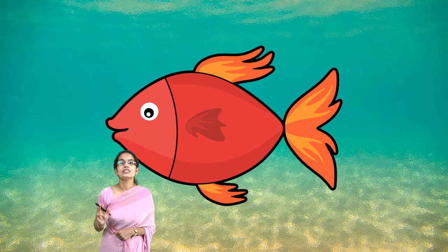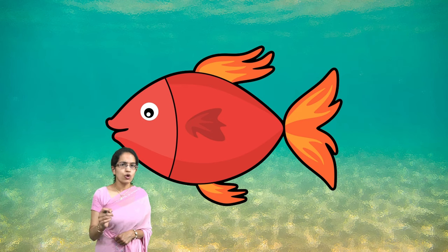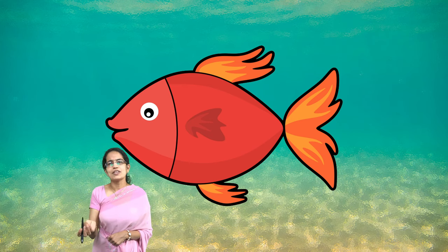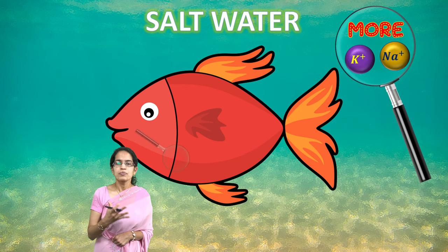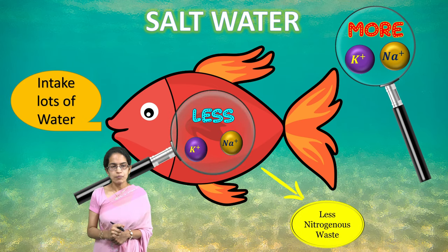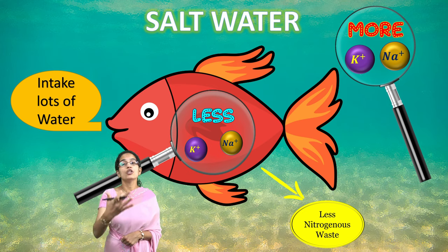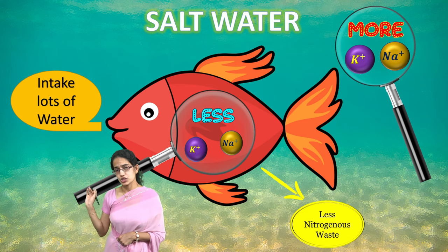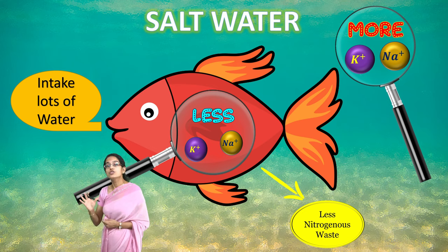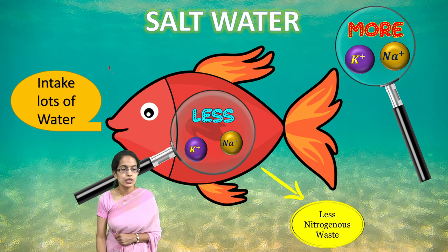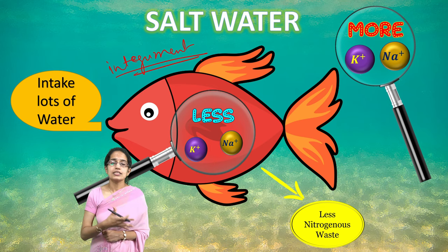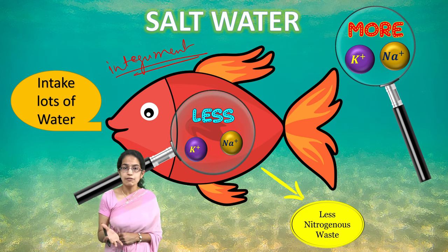The concept of euryhalinity is very important. Let's talk about saltwater first. The concentration of ions outside in saltwater is much higher compared to the fish's body. In order to meet this challenge, the fish needs to conserve water. So what happens is the fish intakes a lot of water but excretes very little nitrogenous waste — that is how fishes behave in saltwater. This excretion of salt cells occurs through either the gills or the lining of the fishes, also known as the integument. The integument and gills are two organs that help in salt excretion.